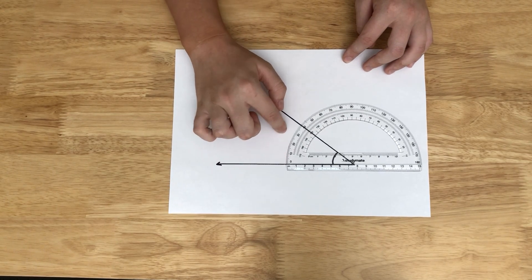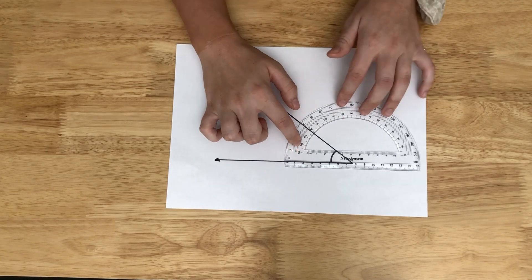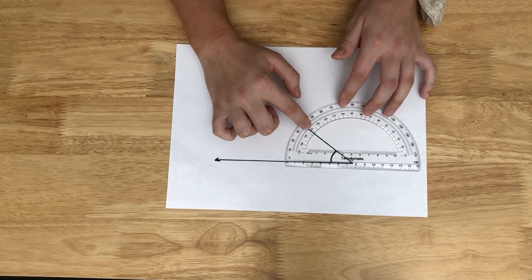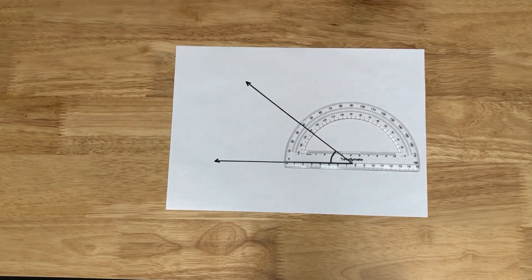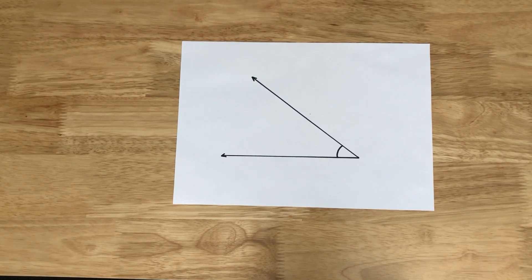We have to count from 0 to 40. We won't go 170, 160, 150, 140 because that's not how we count. We go 0 to 40. This acute angle is 40 degrees.